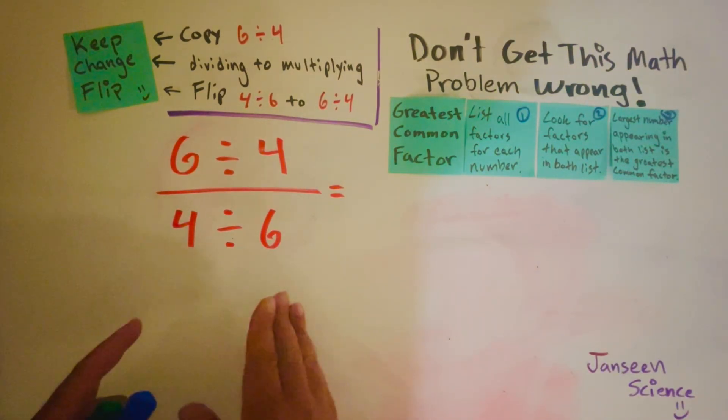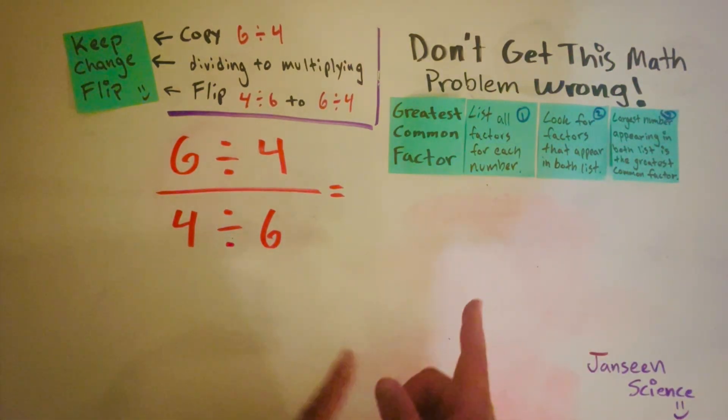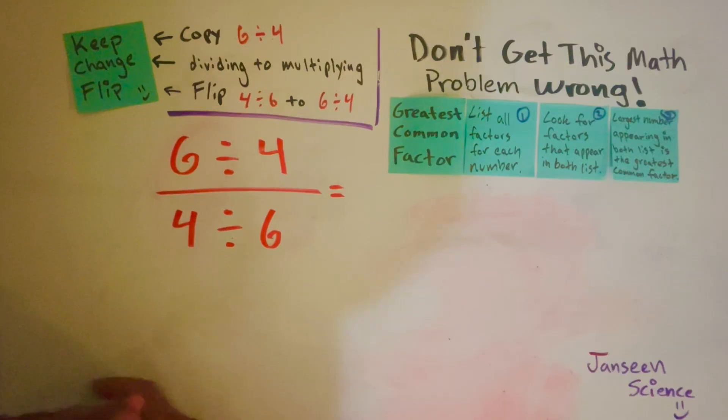In this video I'm going to show you how to solve this problem so you don't get it wrong. I will start by using a method called keep change flip, so 6 divided by 4 divided by 4 divided by 6.